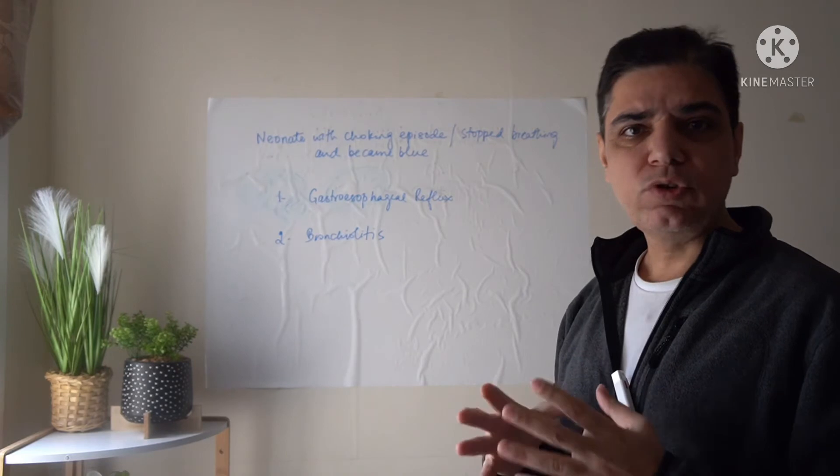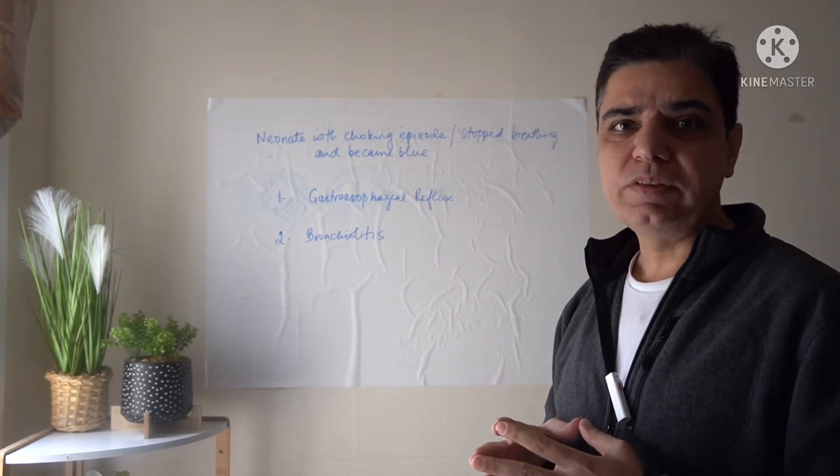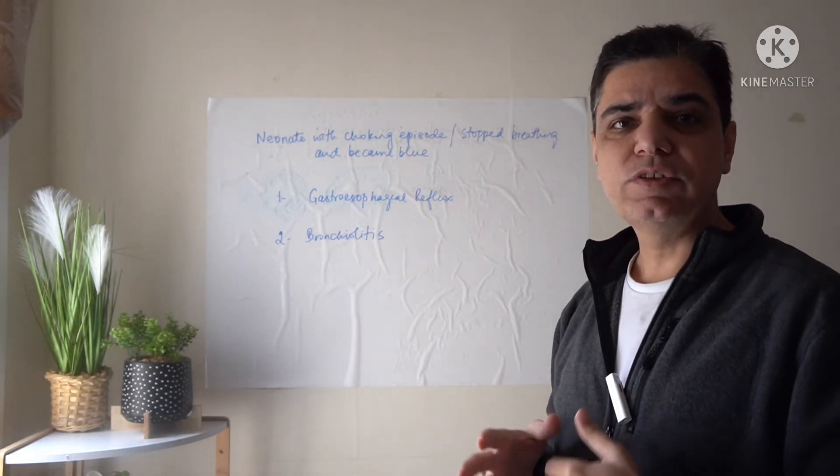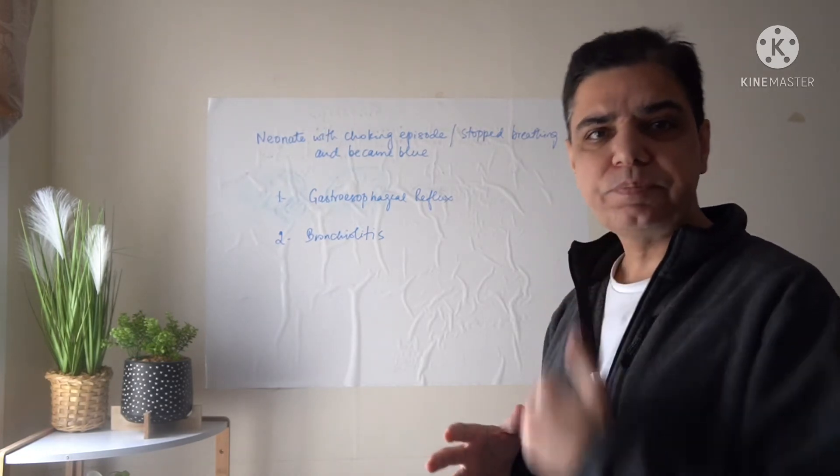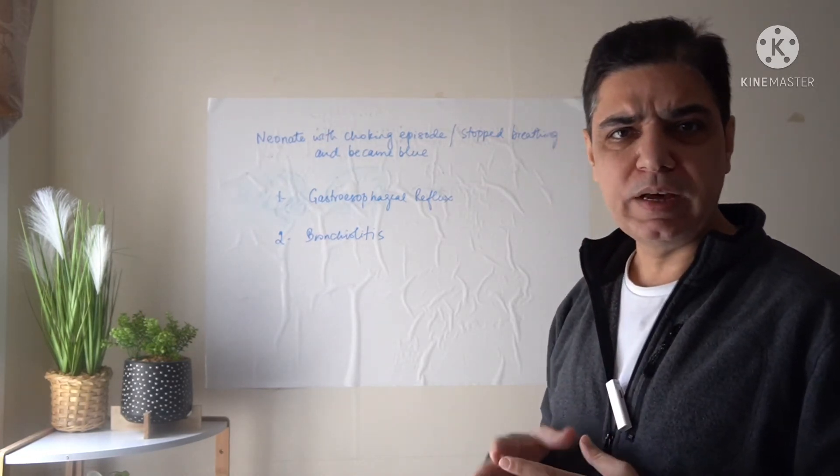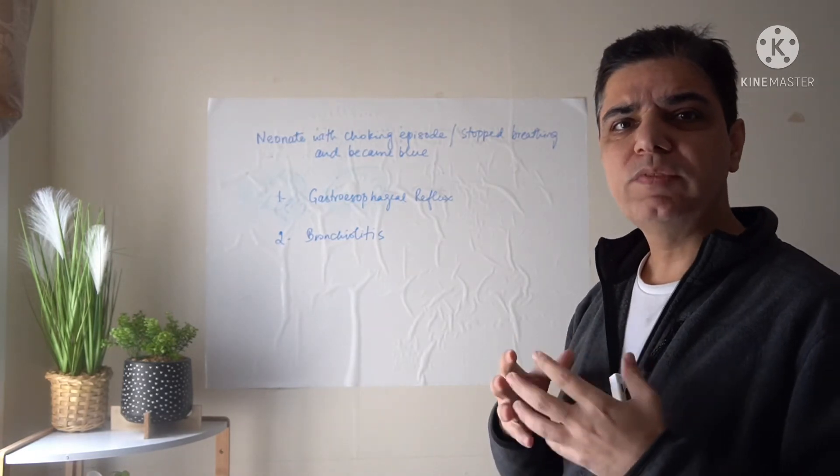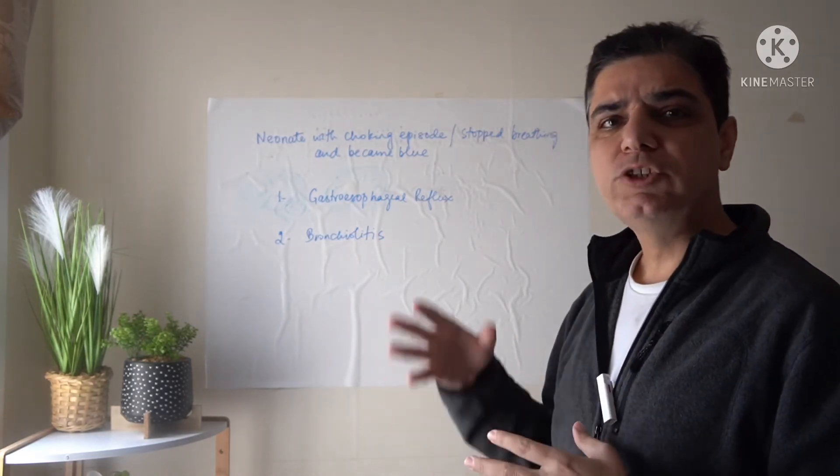Gastroesophageal reflux most commonly occurs in sleep. And what happens is when there is regurgitation of the stomach contents back into the upper part of the gastrointestinal system, it leads to spasm of the upper airways.